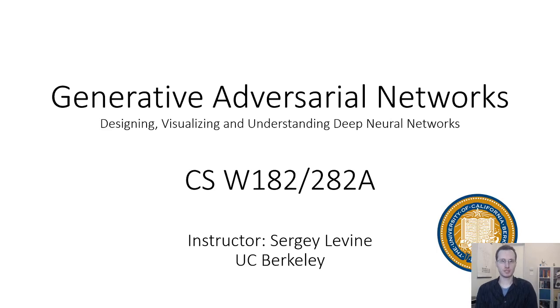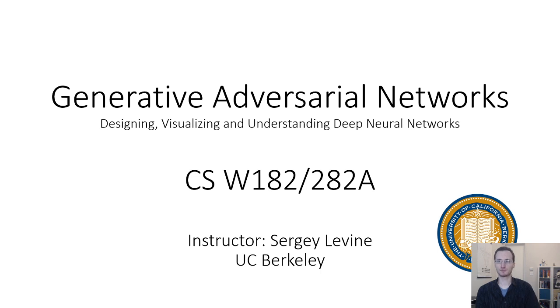Welcome to Lecture 19 of CS182. Today we're going to discuss the last category of generative models that we're going to cover in this course: generative adversarial networks.